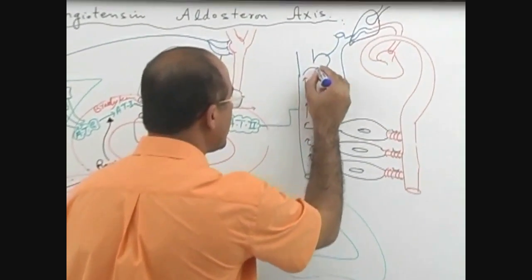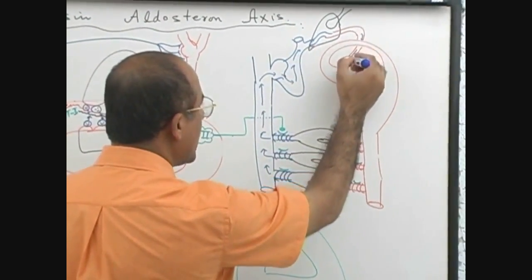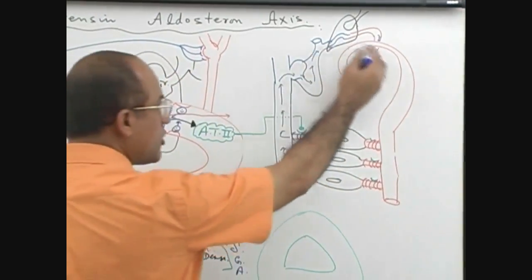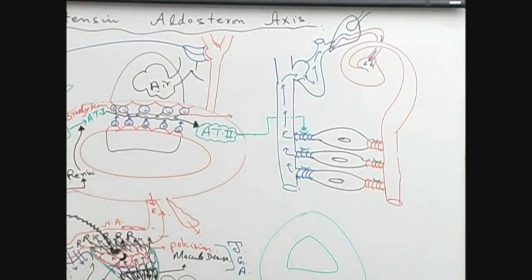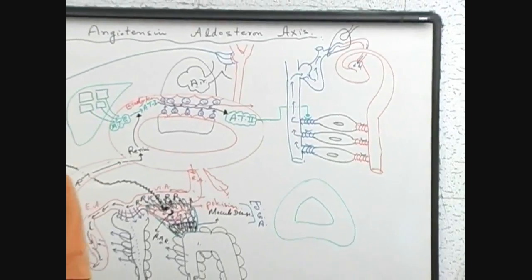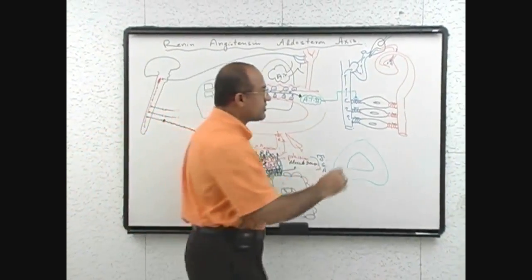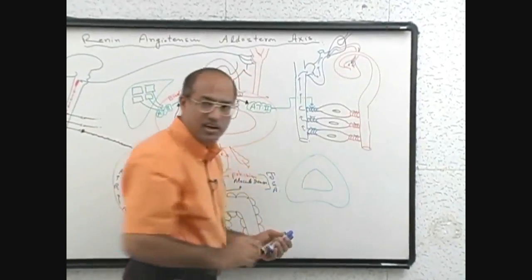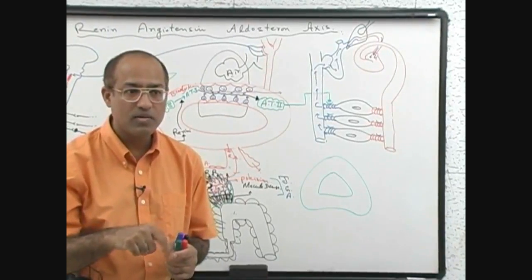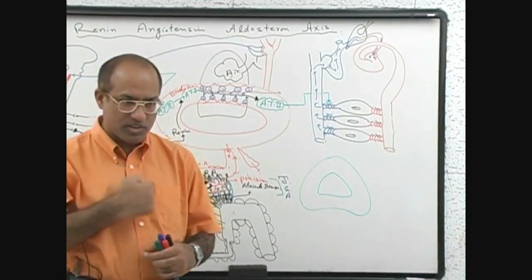Blood rushes toward the heart — eventually to the left heart. Under venoconstriction, venous return to the heart is increased. When blood flow to the left heart increases, cardiac filling is greater. Venoconstriction leads to increased venous return, which leads to increased cardiac filling.